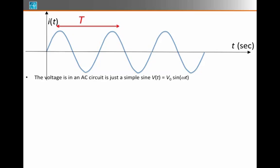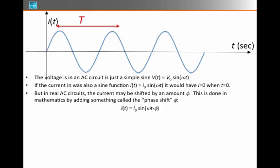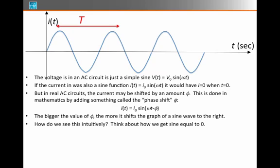The voltage is always going to have this functional form, V(t) = V₀ sin(ωt). We're just going to start with that as always our starting principle. But then we take some consideration of what happens to the current. i(t) = I₀ sin(ωt) is what the curve would look like if the current was zero when t equals zero. But in AC circuits, we might have this phase shift. The bigger the value of φ, the more it shifts this sine wave to the right.